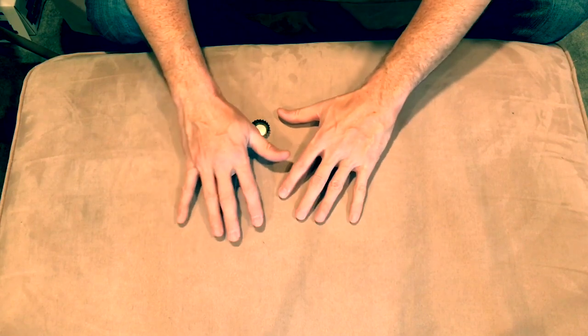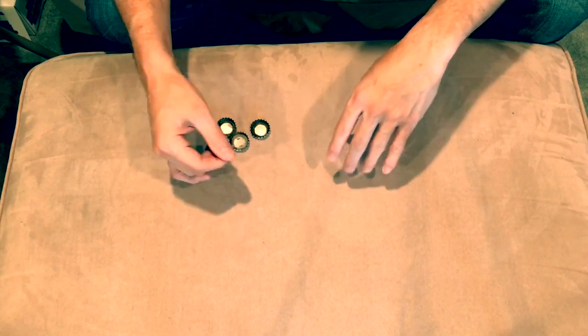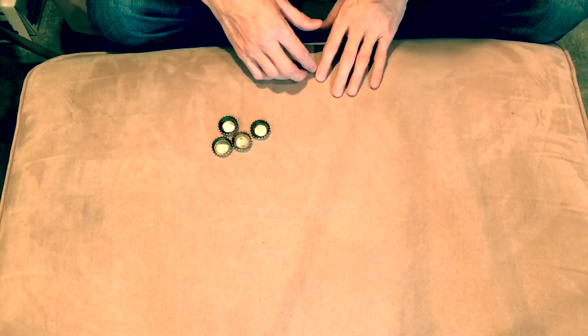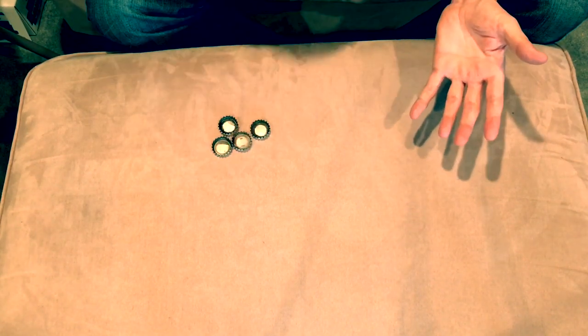Then the final one, same thing, just like that. Now you've got one here. To get rid of this one, what you'll do is just pull your hand back to the edge of the table and drop it. Now it's gone, it's on the floor.